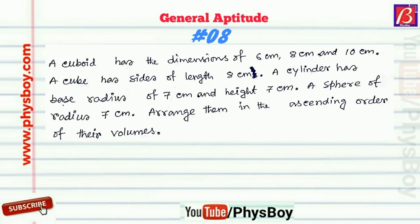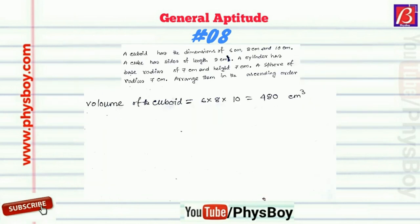The next question: a cuboid has dimensions 6 cm × 8 cm × 10 cm; a cube has sides of length 8 cm; a cylinder has base radius 7 cm and height 7 cm; and a sphere has radius 7 cm. Arrange them in ascending order of their volumes.